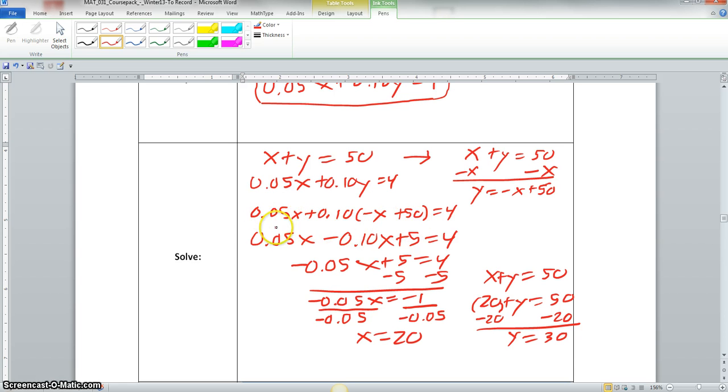And when I do that, I am left with 0.05x, 0.10 times negative x is negative 0.10x, and 0.10 times 50 is 5, and that equals 4.